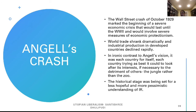The Wall Street crash in October 1929 to 1930 marked the beginning of a severe economic crisis that would last through the entire period of World War II and would involve several measures of economic protectionism. World trade shrank dramatically and industrial production in developed countries declined rapidly. In ironic contrast to Angell's vision, it was each country for itself — each country trying as best it could to look after its own interests, if necessary to the detriment of others. The jungle rather than the zoo. The historical stage was being set for a less hopeful and more pessimistic understanding of international relations.